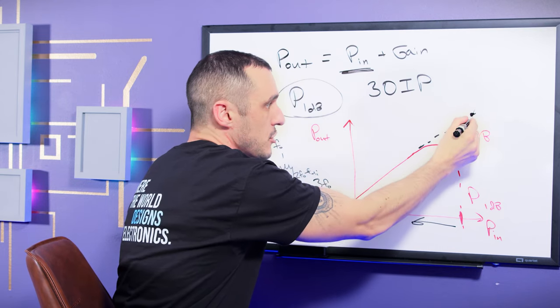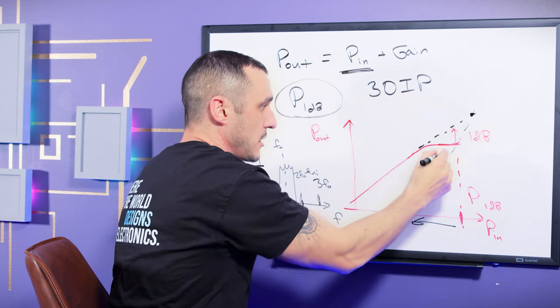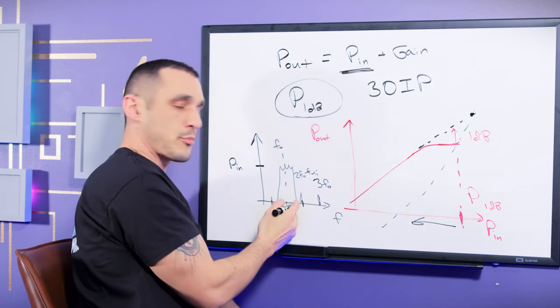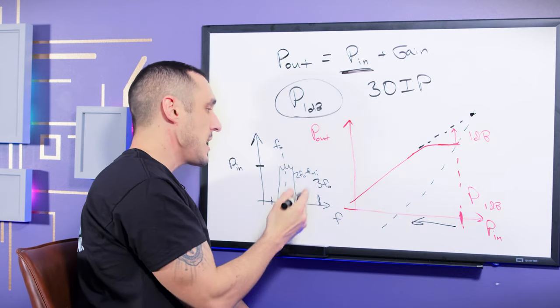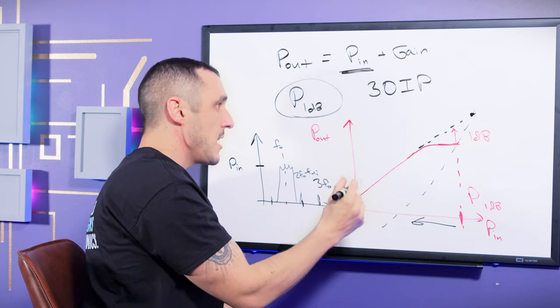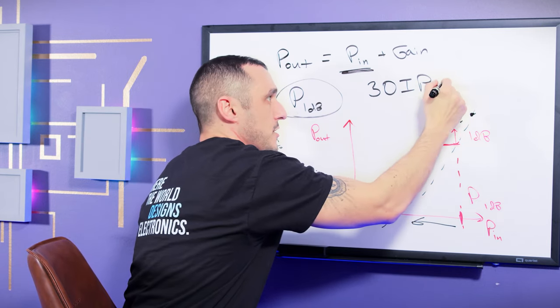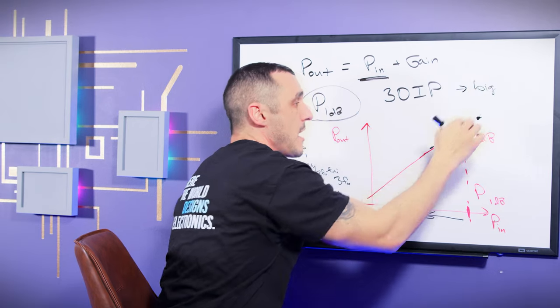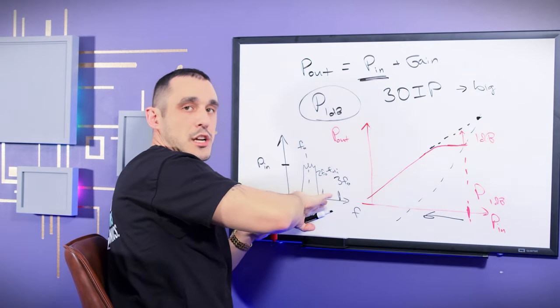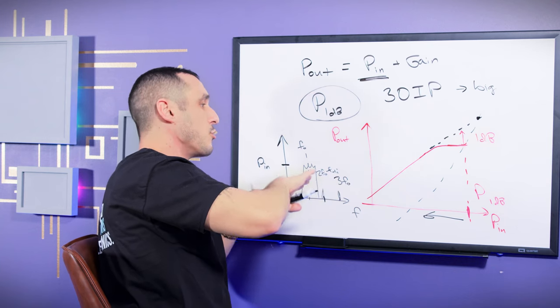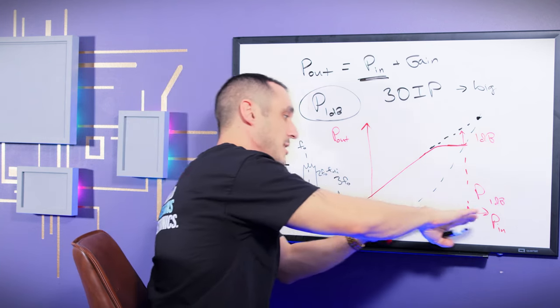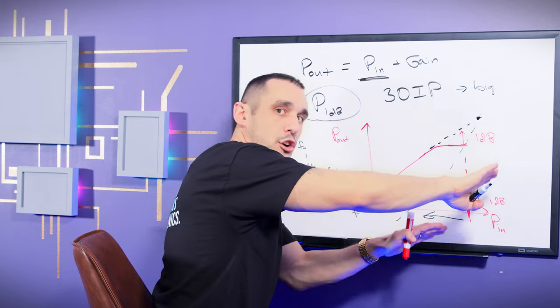But what this is telling you is it is essentially telling you how big the third order products are going to be in this component. And so you would like for this to be as large as possible. So we want this to be a big number. That means you're going to get much lower harmonic content generation and you won't start to see it until your input power value gets much larger.